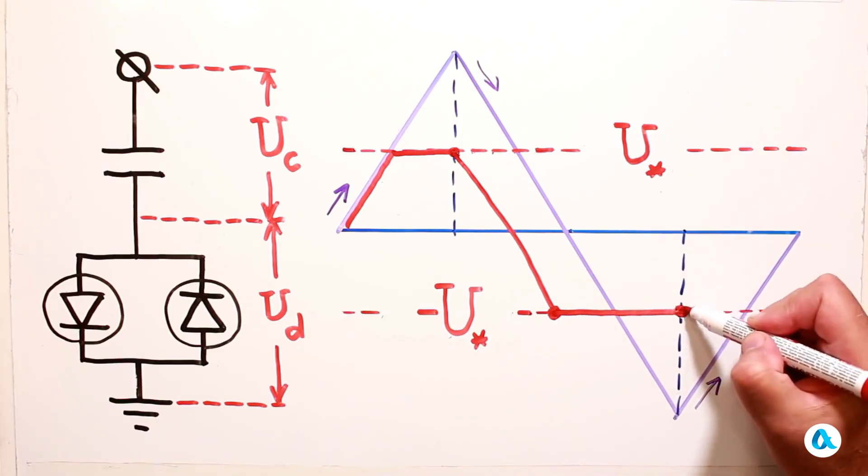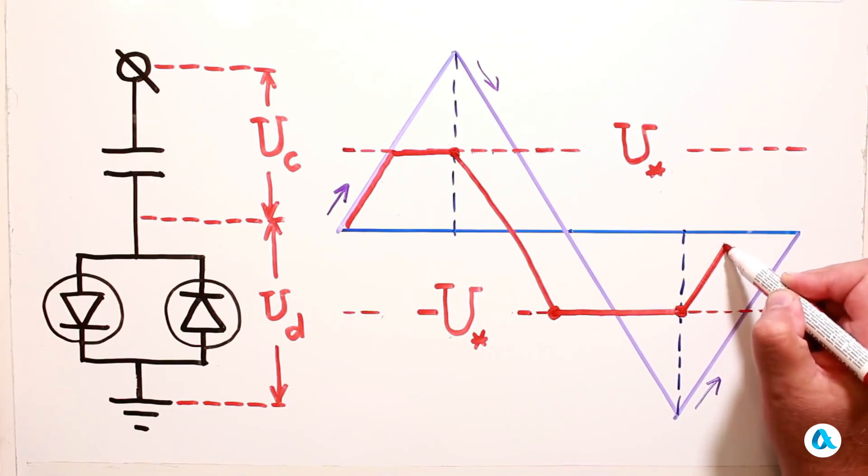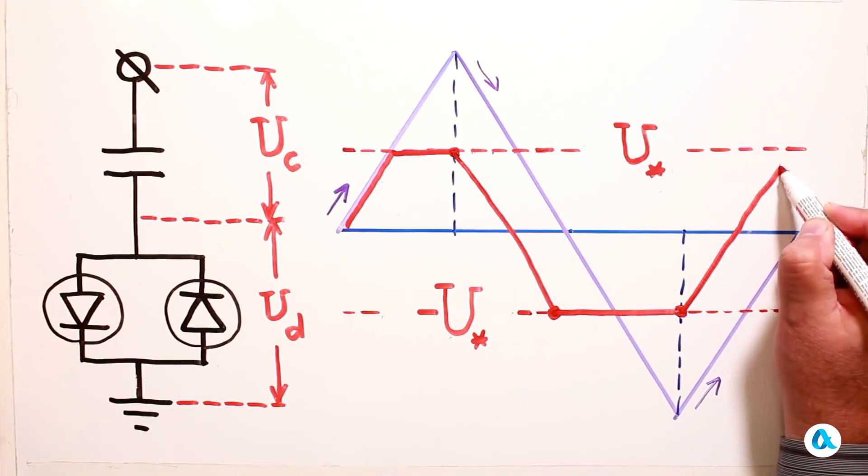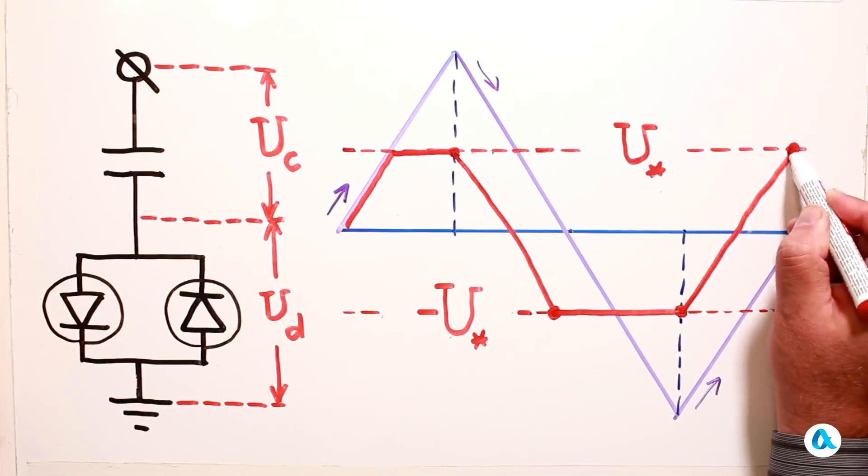After that the switch closes again. The voltage across the capacitor remains constant and the voltage across the switch increases, changing its polarity.